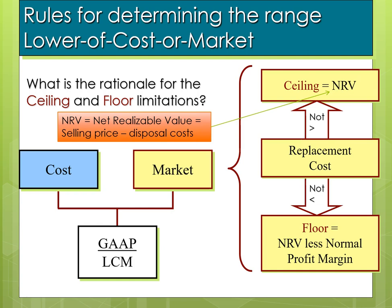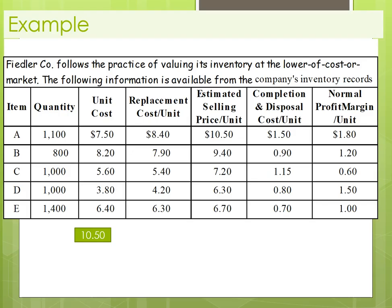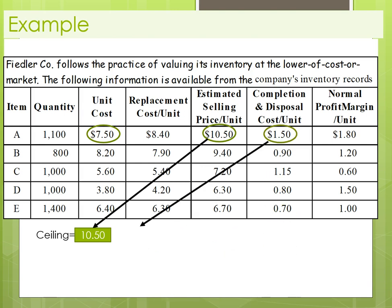Now we're going to walk through some examples on how to do this. We have these columns: quantity, unit cost, replacement cost, estimated selling price, completion and disposal cost, and normal profit margin per unit in dollars. We start by taking the estimated selling price and subtracting the completion and disposal unit cost, which tells us our ceiling — in this example, that's going to be nine dollars.